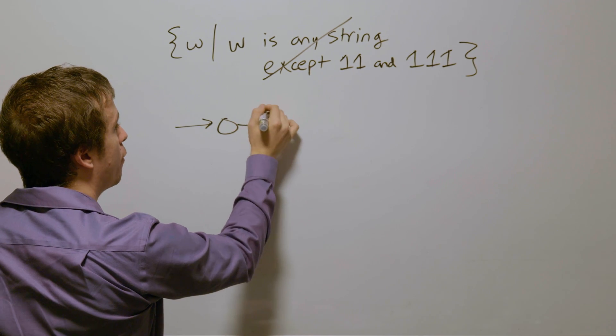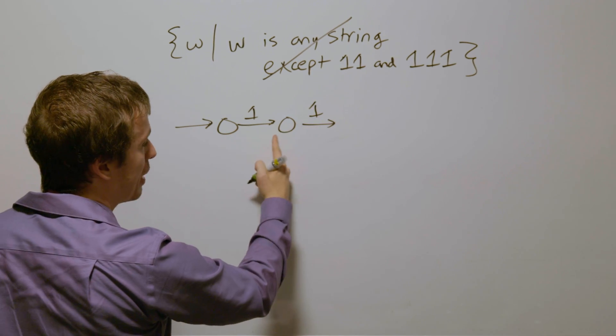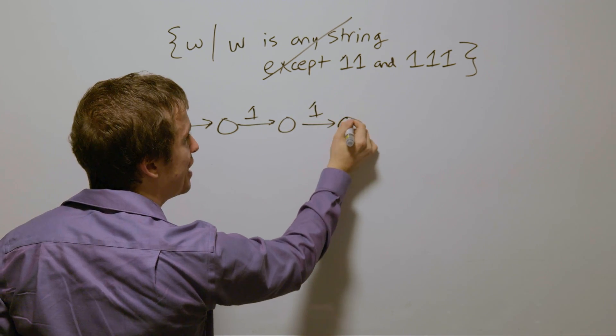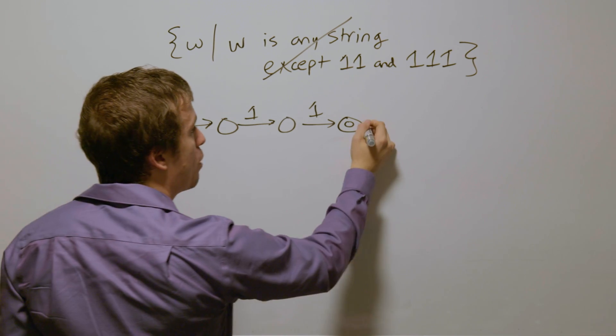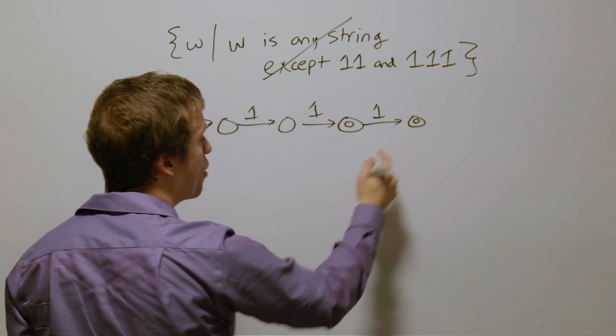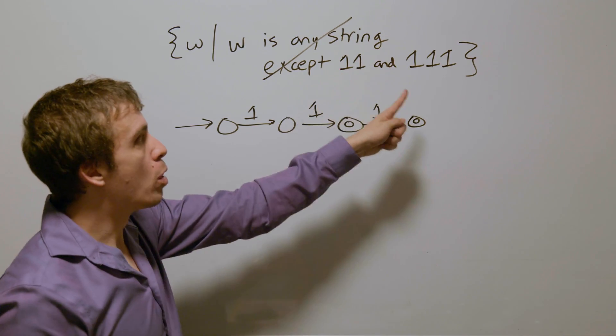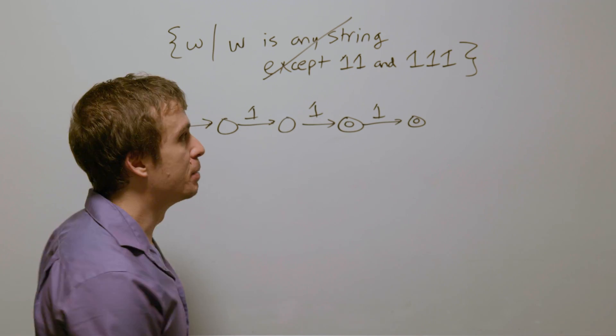I'm going to have one and then one right here. So that means we have read two ones. Therefore we need to accept right here. If we read one more one, we will accept right here because we have read three ones. If we read anything else other than that, it's not one of these two strings, and so therefore it should not be accepted.